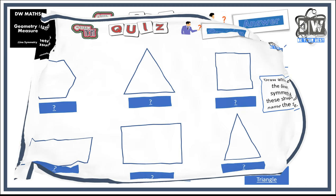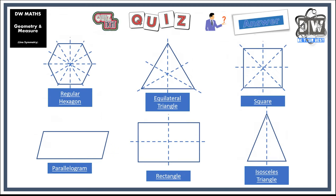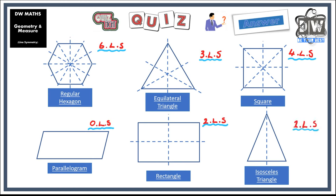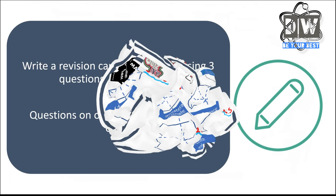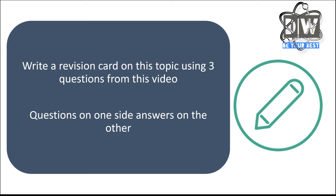Here are the answers. The first shape is a regular hexagon, second is an equilateral triangle, then square, parallelogram, rectangle, and isosceles triangle. The lines of symmetry: regular hexagon has six, equilateral triangle has three, square has four, parallelogram has zero, rectangle has two, and isosceles triangle has one line of symmetry.